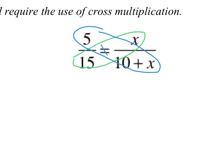So I have 15 times x, which is just 15x. And that's equal to, here's where a lot of students are going to take a tumble. This is 5 times the expression of 10 plus x. So it's going to be 5 times 10 plus x.